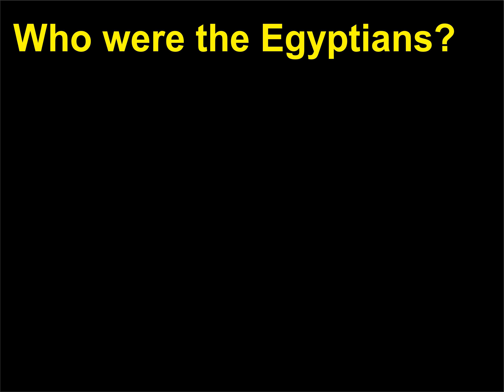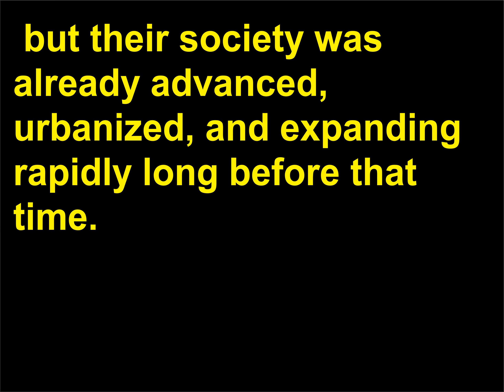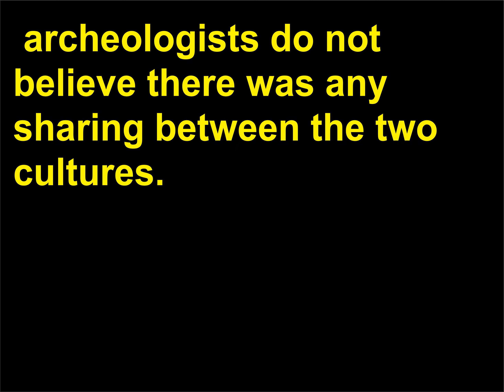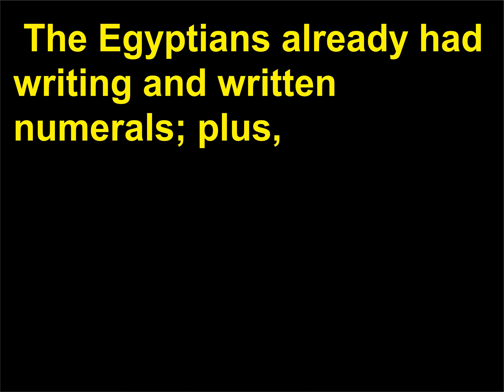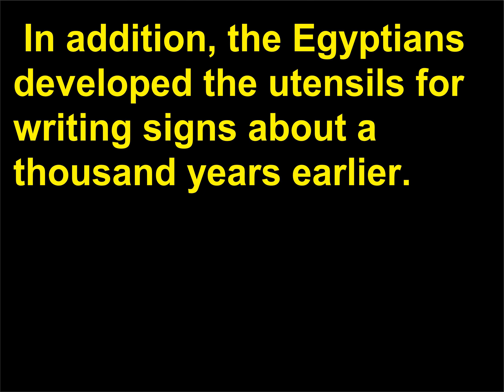Who were the Egyptians? The Egyptians rose to prominence around 3000 BCE in the area we now call Egypt, but their society was already advanced, urbanized, and expanding rapidly long before that time. Although their civilization arose about the same time that words and numbers were first written down in Mesopotamia, archaeologists do not believe there was any sharing between the two cultures. The Egyptians already had writing and written numerals, and their signs and symbols were taken exclusively from the flora and fauna of the Nile river basin. In addition, the Egyptians developed the utensils for writing signs about a thousand years earlier.